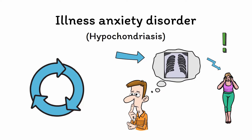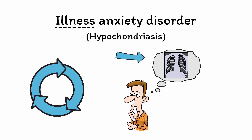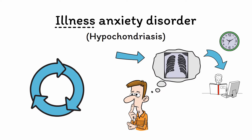Luckily, the key words for each are embedded into their names. Somatic symptom disorder is about the symptoms, while illness anxiety disorder is about the illness or disease. The patient's belief that they have a disease leads them to spend lots of time and energy in compulsive health-related behaviors, such as researching the disease online or scanning themselves for signs of the disease, like repeatedly checking for suspicious lumps or taking their own vital signs.